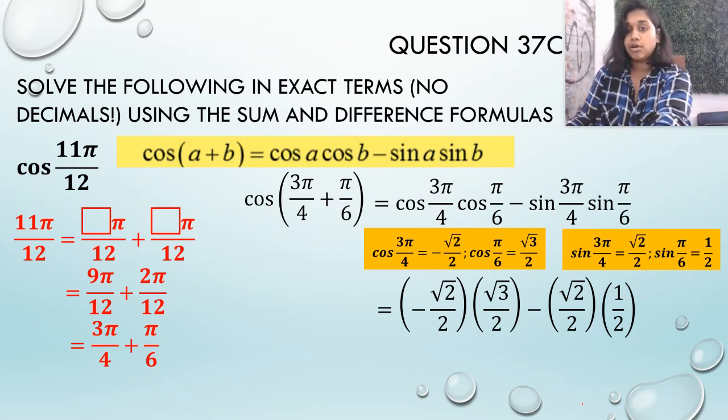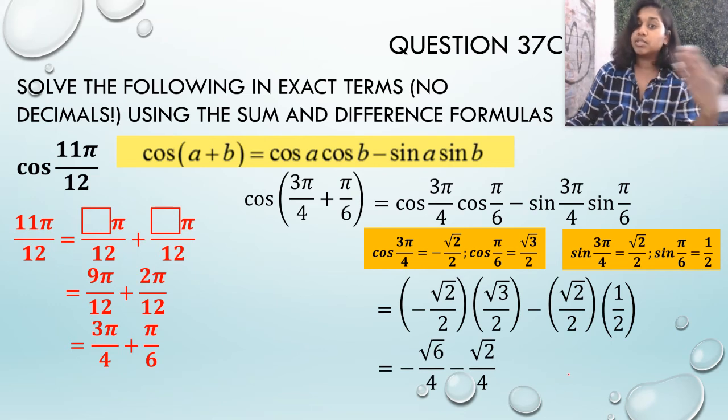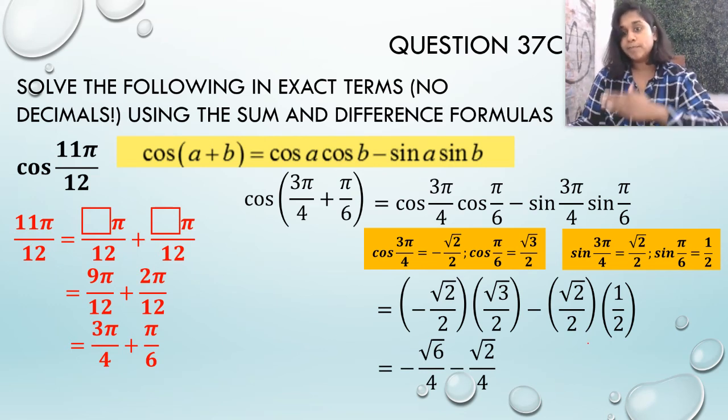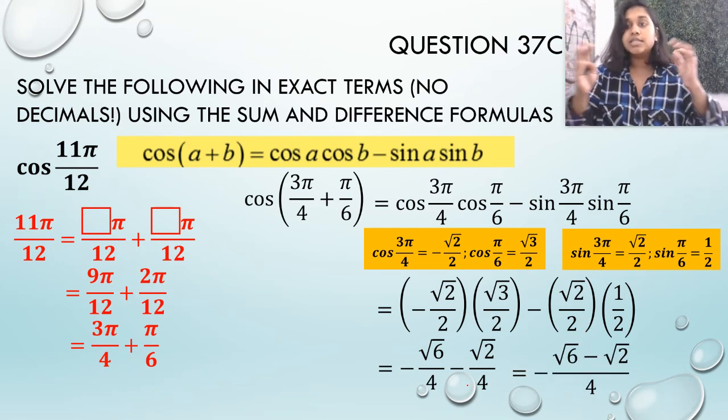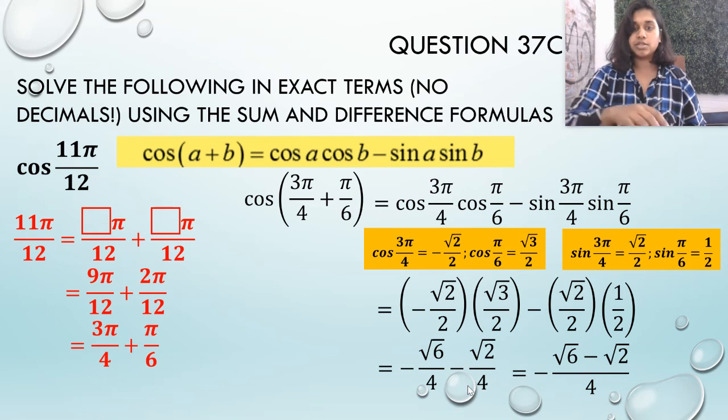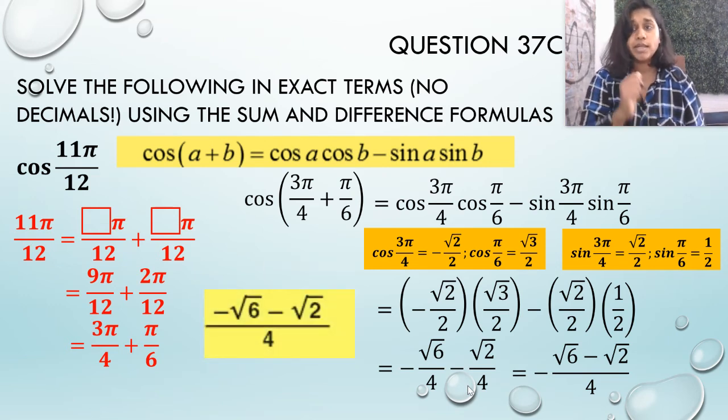Now, we multiply across. The square root of 2 times the square root of 3 is the square root of 6. 2 times 2 is 4. Square root of 2 times 1 is square root of 2. 2 times 2 is 4. And we put those two together. And ta-da! We end up with our answer. On your homework, if you end up with decimal answers, you may not get full credit.